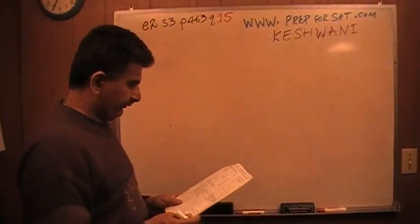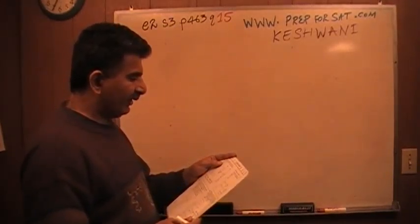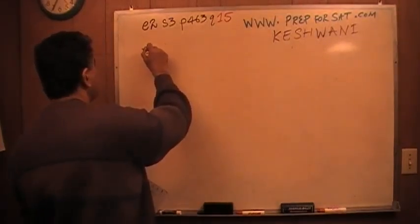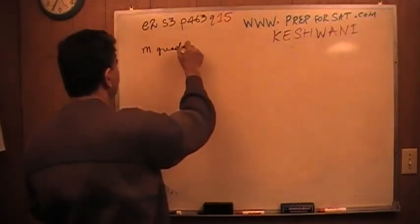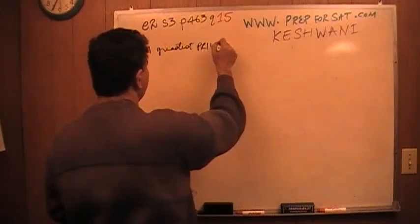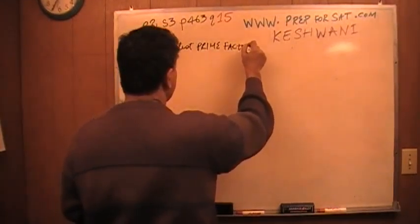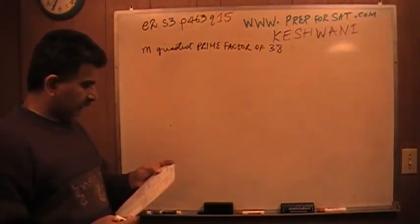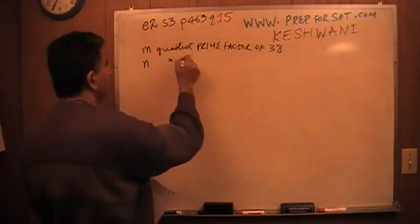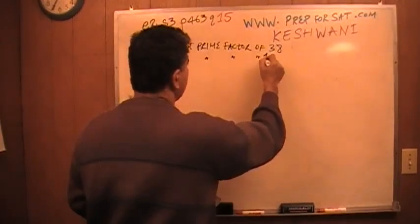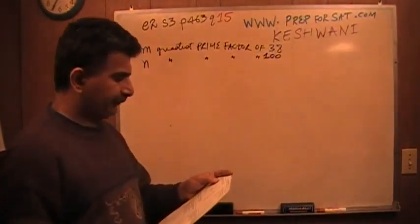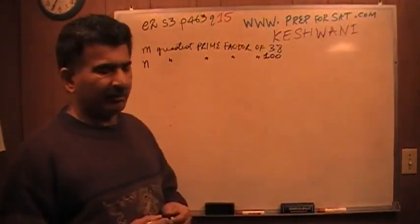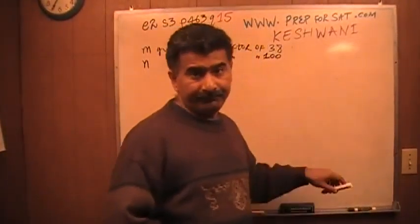Problem number 15. It says M is the greatest prime factor of 38, N is the greatest prime factor of 100. The question simply is what is the value of M plus N? So it seems like all we have to do is find the greatest prime factor of these numbers and just add them up. That's all.